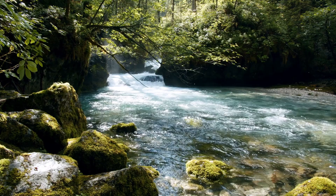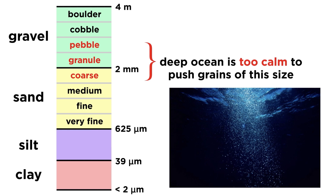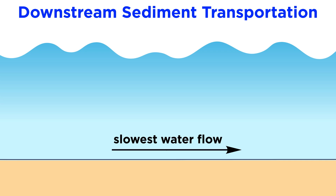Let's now talk about how sediment is transported in streams to better understand how it is deposited. The ability of a stream to transport a sediment depends on the diameter of the sediment and the velocity of the stream, with the coarsest sediment requiring the highest water velocities to be eroded and transported.